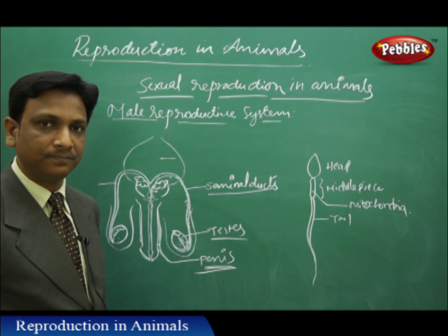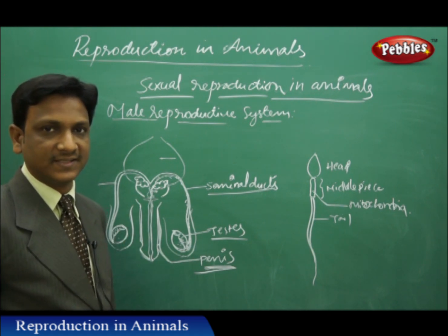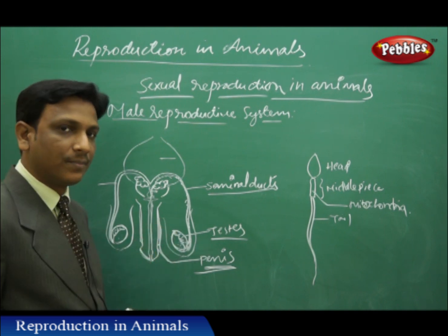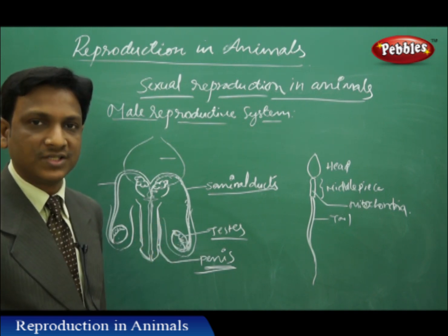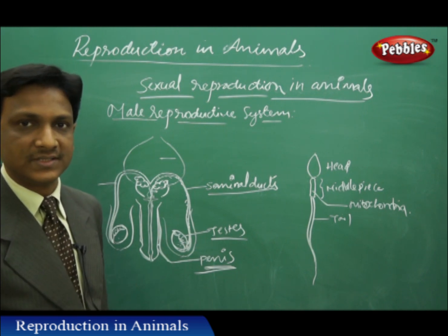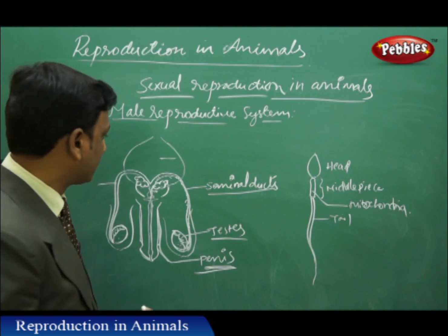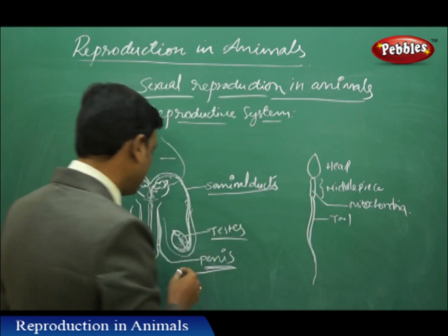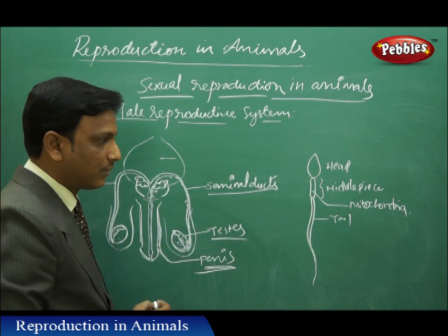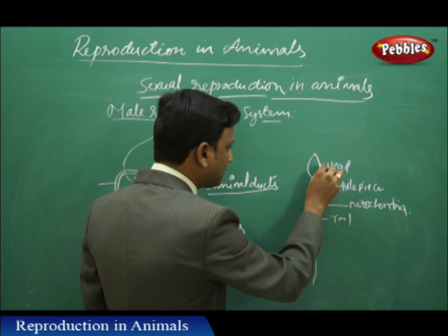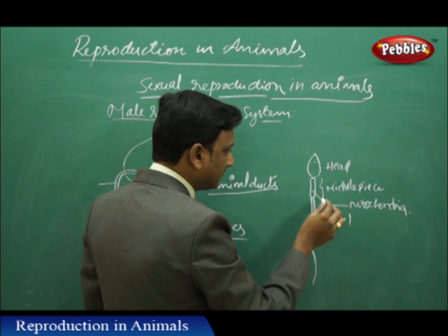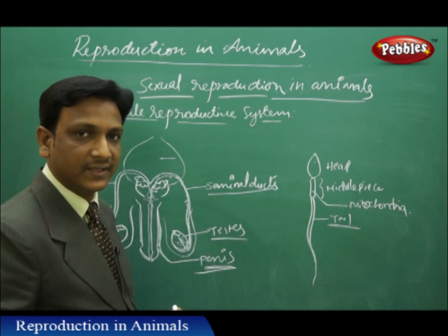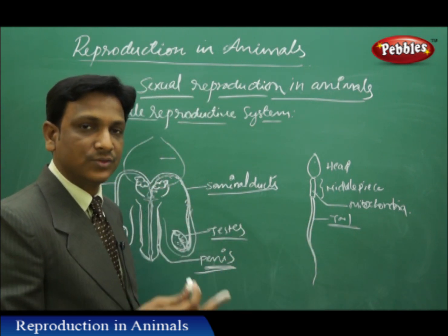The aim of the male reproductive cells is to reach the female reproductive cells and fertilize them. Millions of sperm cells are produced - male gametes are produced in very large numbers. Out of these large numbers, only one male reproductive cell will fertilize the female reproductive cell. Now let us see the structure of one sperm cell. The sperm cell has three major parts: the head, the middle piece, and the tail.